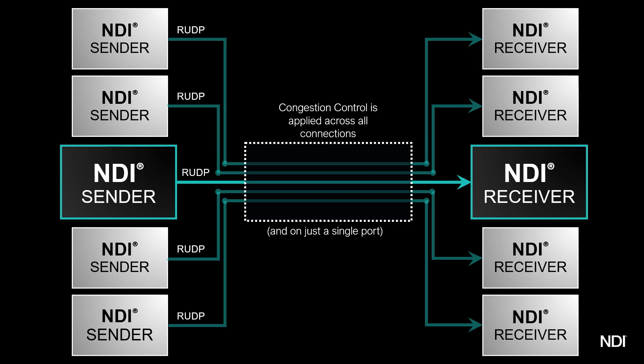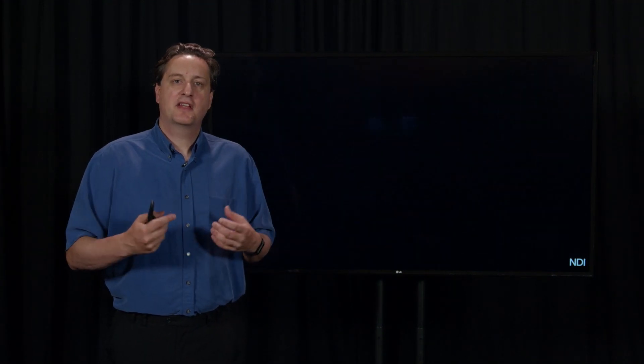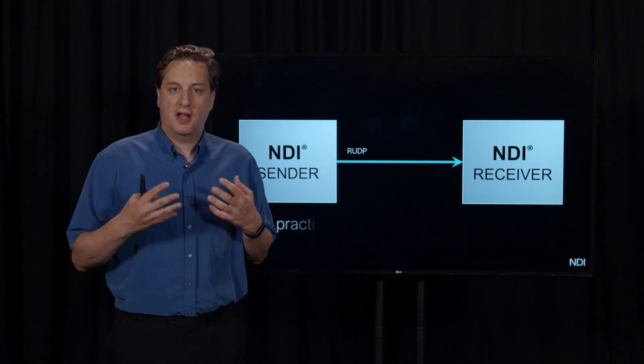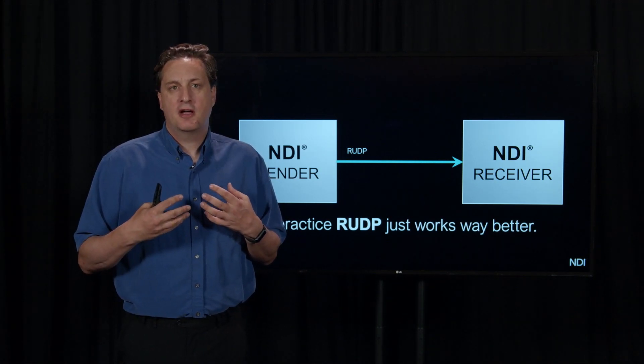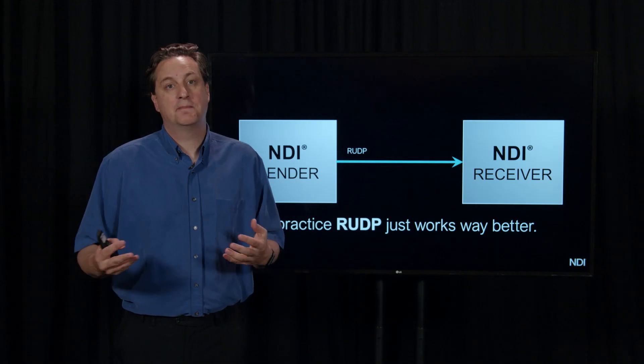This is what allows NDI version 5 to truly adapt and have a very large number of streams all working at once, reliably, on the network you just have. When you actually start to use this, from my personal experience, when you're using Reliable UDP with NDI 5, it just works better. This is hopefully a feature you never really know is there, but that just makes your system work better.